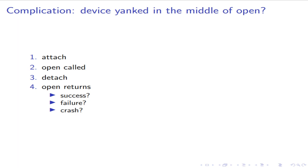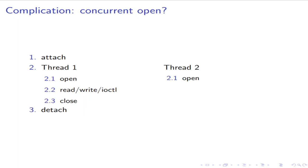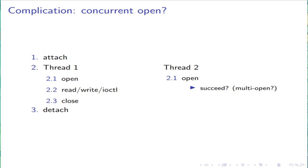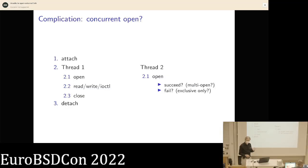Many device nodes can be opened by more than one process at once — for example, two DD processes reading from different parts of a disk character device. The software has to contend with the device being opened more than once. For some devices like a UHID device in NetBSD, it's exclusive — open must fail when two processes try simultaneously. The driver's close function from the cdev switch table is only called for the last close; each open has a separate call to dopen, but only the last close triggers the driver's dclose.